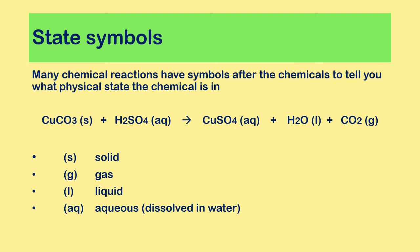You don't always have to resort to looking at the data booklet to know whether a product is soluble or not. Many chemical equations include state symbols that tell you the physical state of each chemical. For example, in the reaction: copper carbonate + sulfuric acid → copper sulfate + water + carbon dioxide, you can see beside each chemical a symbol in brackets.